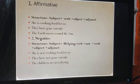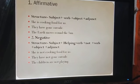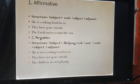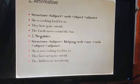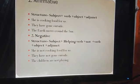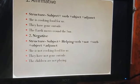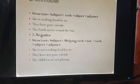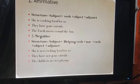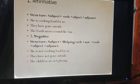Now we go to our second transformed type, that is negative. इसका structure कुछ इस तरह से है: subject आएगा, subject के बाद helping verb आएगी, helping verb के बाद 'not' आएगा, then verb, then object, then there may be any adjunct. See the examples: 'She is not cooking food for us,' 'They have not gone outside,' 'The children are not playing.' खास बात यह है कि helping verb के बाद 'not' लगाना होता है और उसके बाद verb आती है.